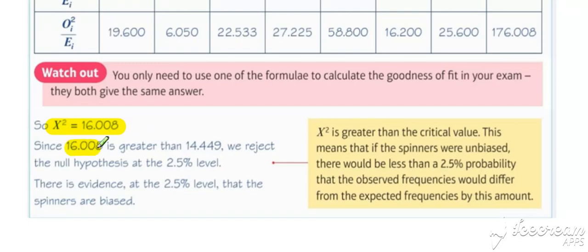And then compare that goodness of fit statistic with the critical value. On this occasion it is greater than, so therefore we reject the null hypothesis. There is evidence at the 2.5% level that the spinners are biased. The observed and the expected differ by enough to support that alternative hypothesis.